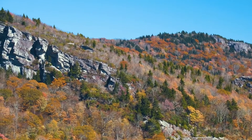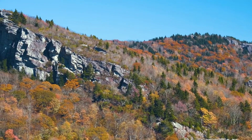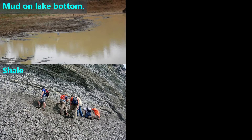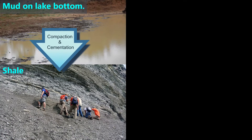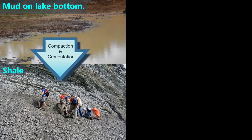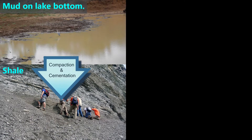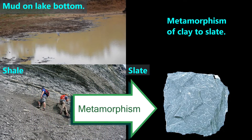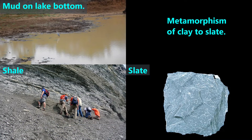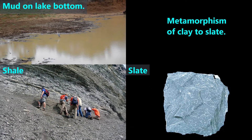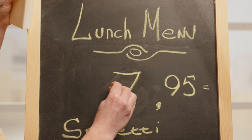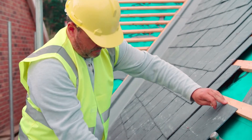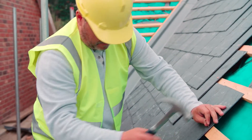Next, let's look at what happens to the sedimentary rock called shale when it undergoes metamorphism. Shale forms when layers of mud on the bottom of lakes or other bodies of water get compacted and cemented. With mildly increased pressure and temperature, that shale turns into slate during metamorphism. You may have seen slate used as a sign in a restaurant. In some countries, slate has also been a popular shingle on homes for many years.